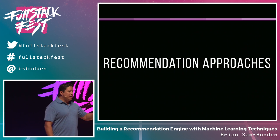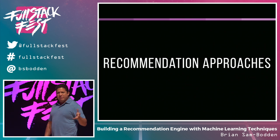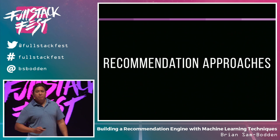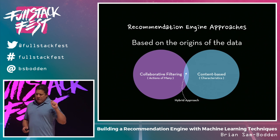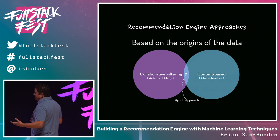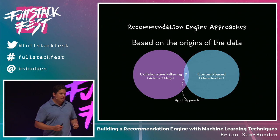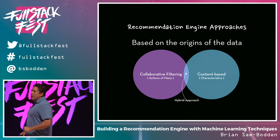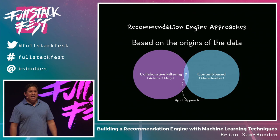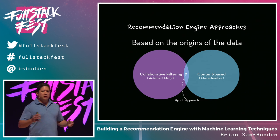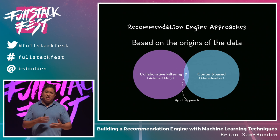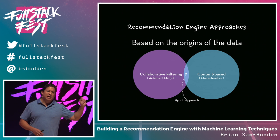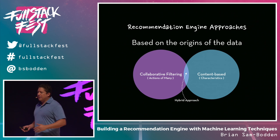Getting back to recommendation engines, there are a couple of approaches. The first is the wisdom of the masses, called collaborative filtering. It relies on collecting a lot of data about the actions of your users — both implicit and explicit. For example, if I'm on a website and I click on an item and browse it for 10 seconds, they might gauge my interest by how much I scrolled through the page, and assign a weight value to my likelihood of enjoying that item.